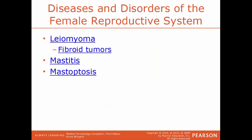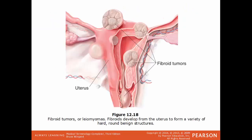Leiomyoma is the name for a benign tumor of the smooth muscle — the type of muscle found on the uterus. A leiomyoma of the uterus is usually called a fibroid. Mastitis is the inflammation of the breast. Mastoptosis is a sagging or drooping of the breast. In this image, we have examples of fibroid tumors — leiomyomas of the uterus. These round structures tend to be hard and solid, but are benign structures.